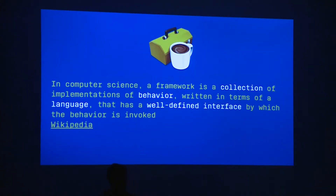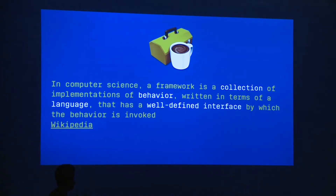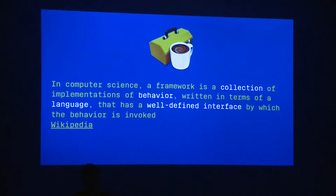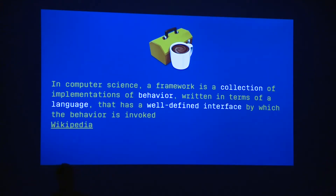According to Wikipedia, a framework is a collection of implementations of behavior written in terms of a language that has a well-defined interface by which behavior is invoked. It's a collection — we put a bunch of things together. It has a behavior, what we usually know as a responsibility. It has to be written in a language — Swift, Objective-C, Java. And it has an interface, which is a way to access whatever is inside that framework.